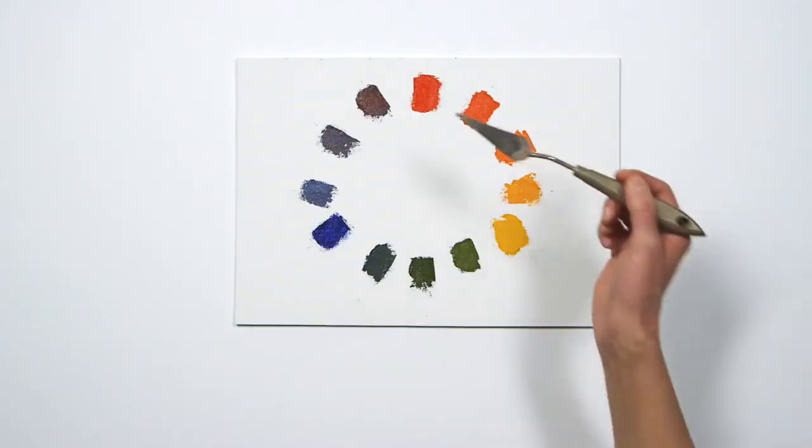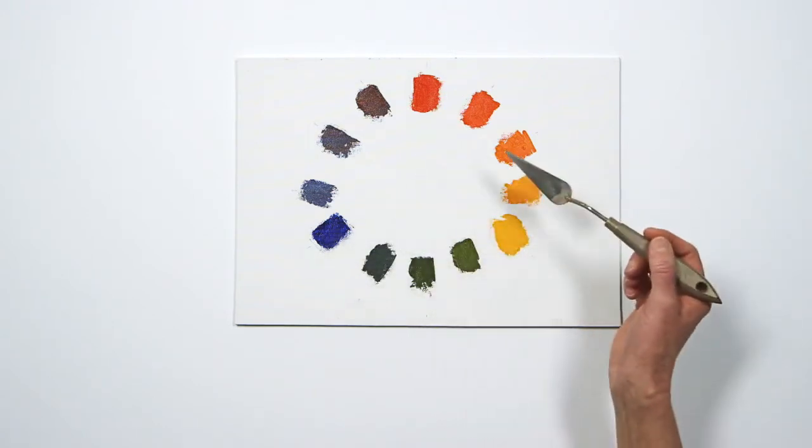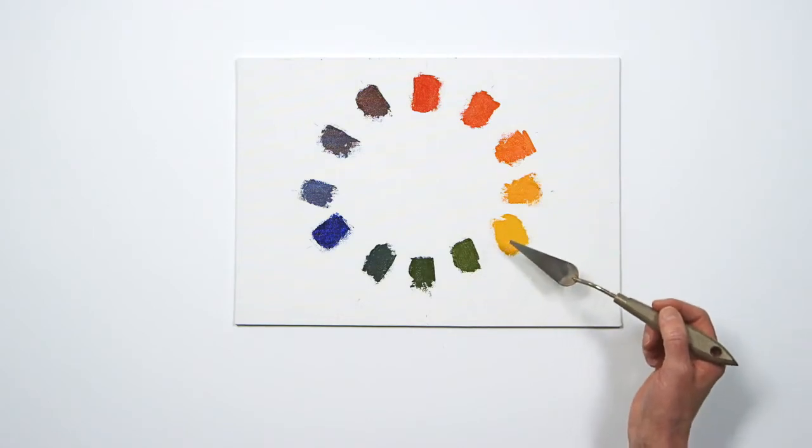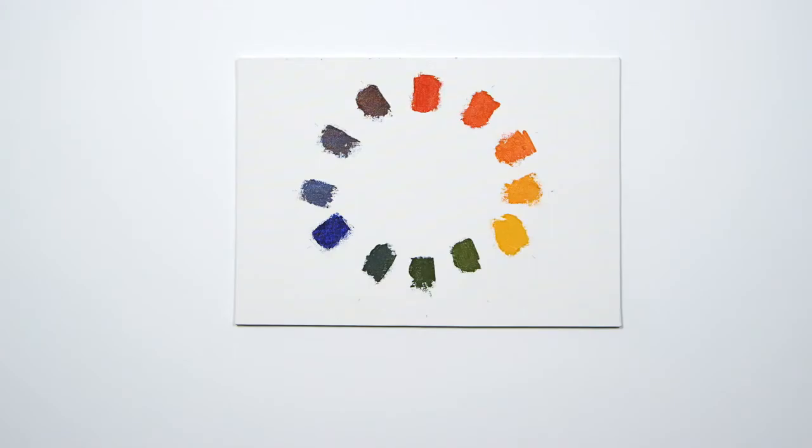Complementary colours are located opposite each other on the colour wheel. They're capable of creating brilliant interactions when placed next to each other, but when you mix them together and add white, they make an amazing range of greys that can lean towards a warm or cool hue.